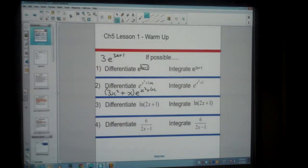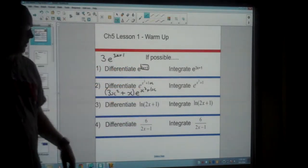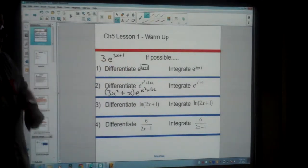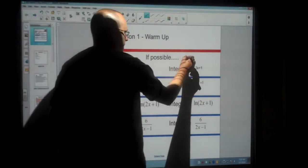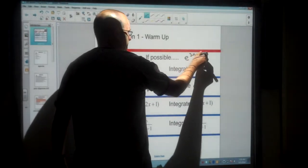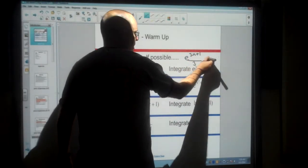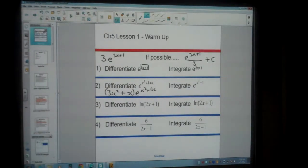Now when it comes to integration, we can actually only do these questions if these original exponents are linear functions. Now the opposite of multiplying by 3 would be to divide by 3. So the answer for this one is actually e to the 3x plus 1 over 3. And as we integrate it, we should always add that constant in on the end.